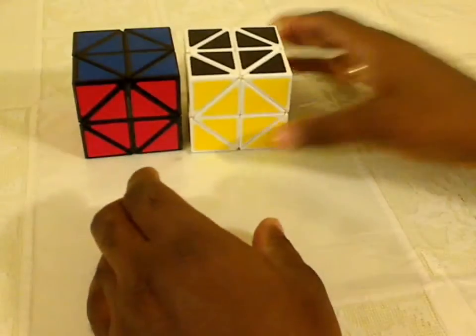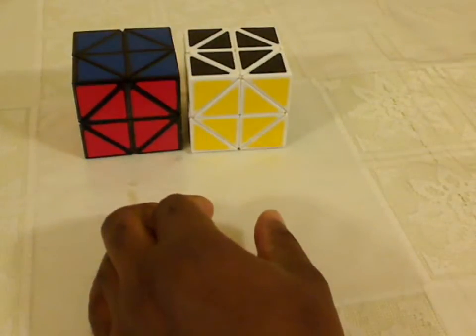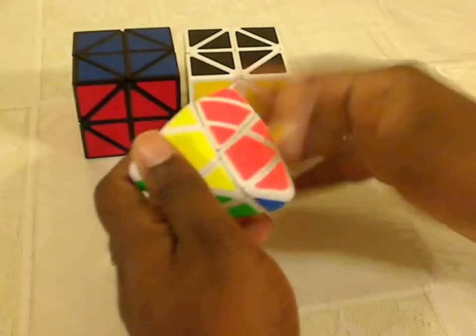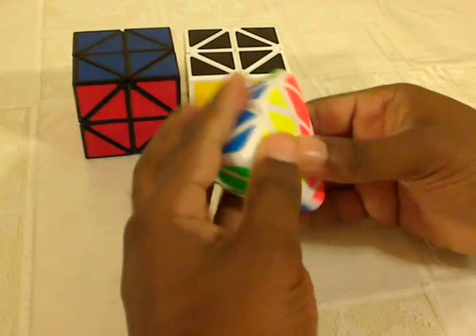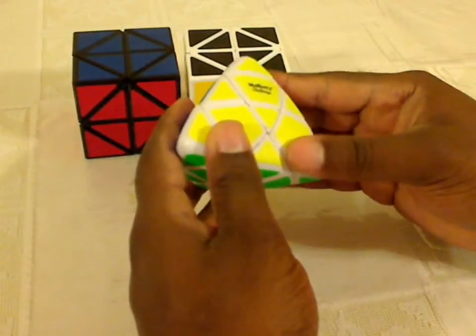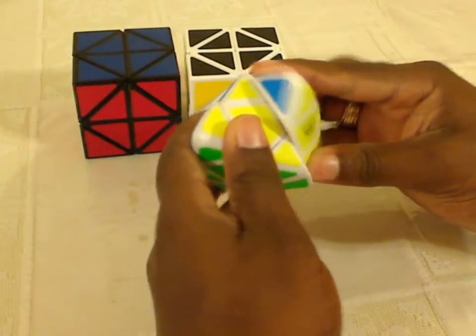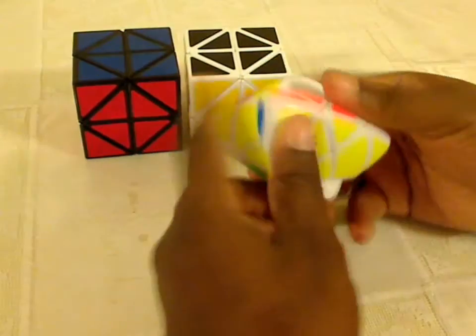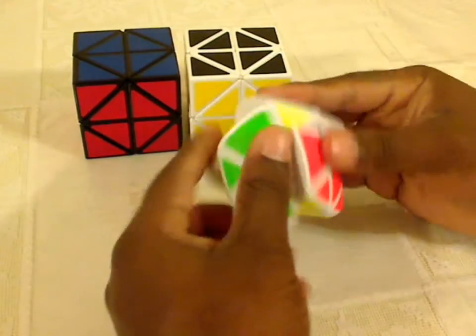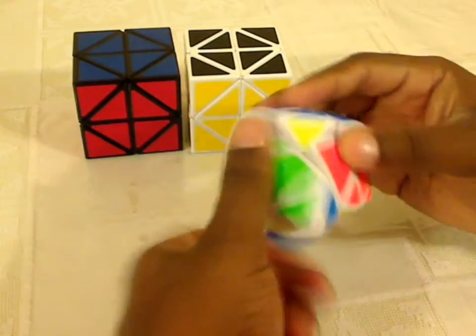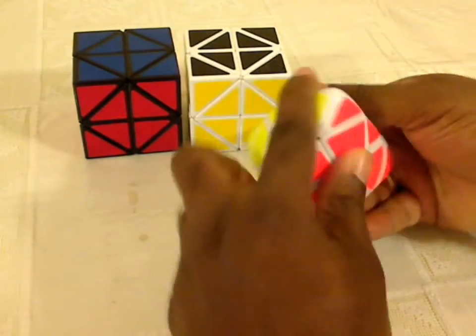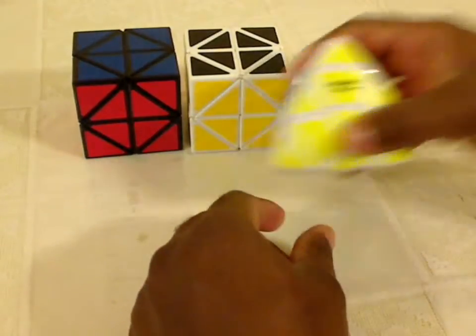This puzzle will remind you a little bit of the master morphix that came out from Mefferts as well. This puzzle could turn 180 degrees on sides, but it could also turn a partial distance and then become a jumbling puzzle as well. So this one would mix up in a quite interesting way as well.